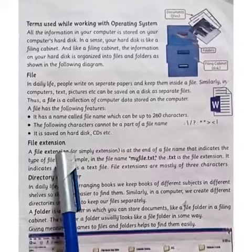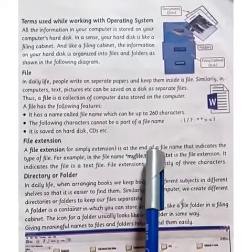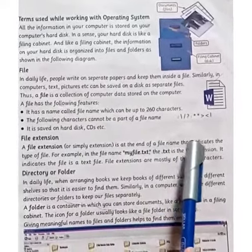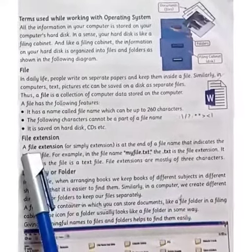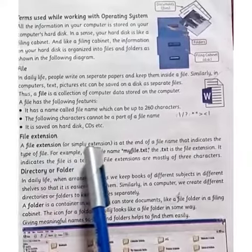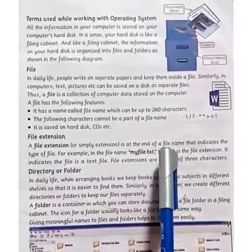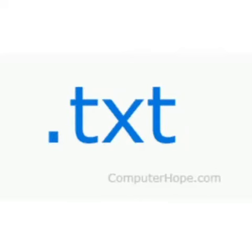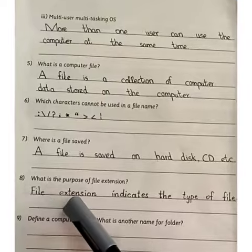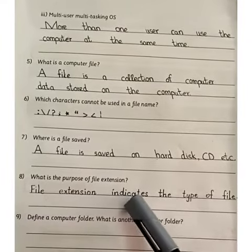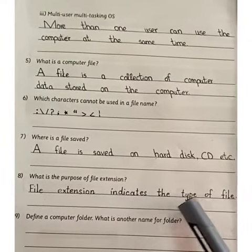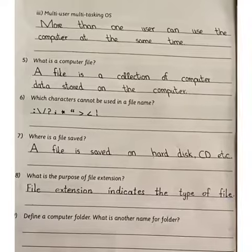Students, a file extension, or simply extension, is at the end of a file name that indicates the type of a file. For example, in the file name 'myfile.txt', '.txt' is a file extension. So our answer is: file extension indicates the type of file.